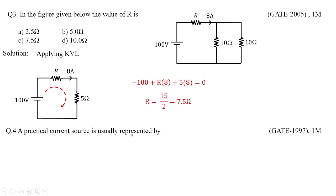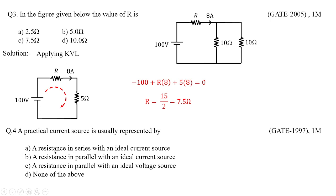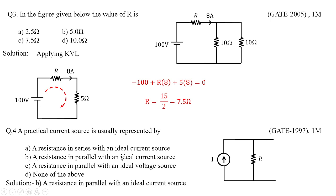A practical current source is usually represented — this was asked in GATE 1997 for 1 mark, a basics-of-circuits question. The options are: a resistor in series with an ideal current source; a resistance in parallel with an ideal current source; a resistance in parallel with an ideal voltage source; or none of the above. A practical current source has a resistance connected in parallel with the source, so option B — a resistance in parallel with an ideal current source — is the correct answer.